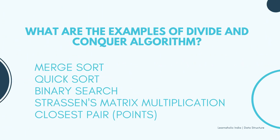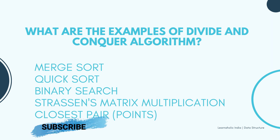The next question is: Can you give some examples of divide and conquer algorithms? Some problems use the divide and conquer algorithm approach. Some of these algorithms are: Merge sort, Quick sort, Binary search, Strassen's matrix multiplication, and closest pair.